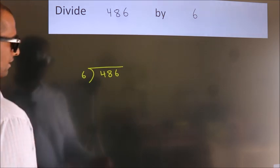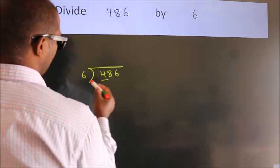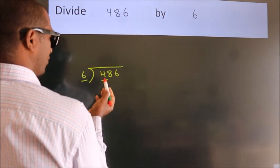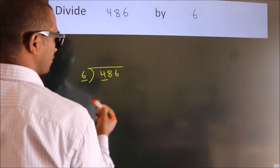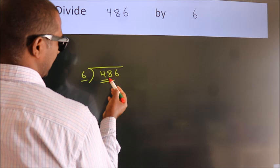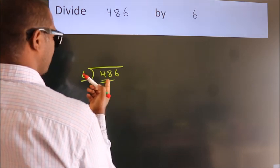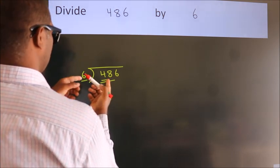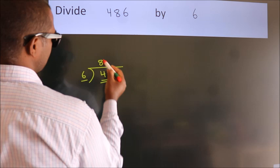Next. Here we have 4. Here 6. 4 is smaller than 6, so we should take two numbers: 48. When do we get 48? In the 6 table. 6 times 8 is 48.